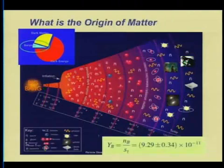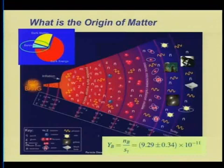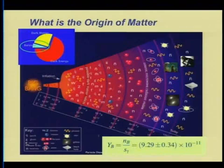This problem is characterized by a number, Y_B, the ratio of the baryon number density to the entropy density of the universe associated with photons. That number is of order 10^{-10}. There aren't a lot of baryons compared to photons, but baryons are massive, so they give a lot of the energy density. We know that number from a couple of different sources and are quite confident in its value.